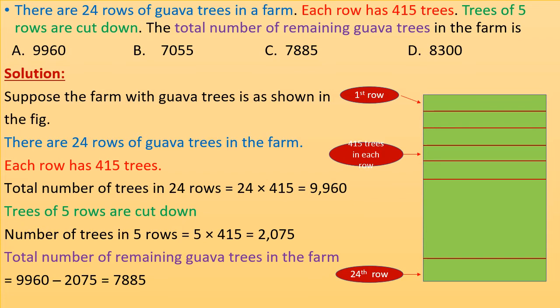There are 24 rows of guava trees in a farm. Each row has 415 trees. Trees of 5 rows are cut down. The total number of remaining guava trees in the farm is?